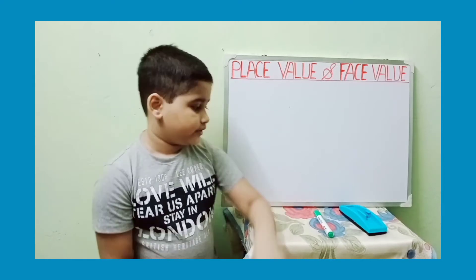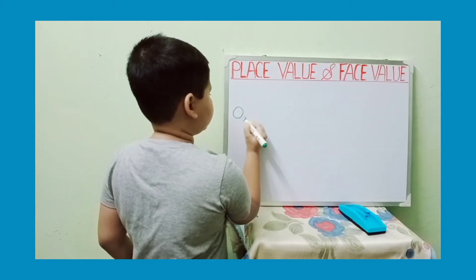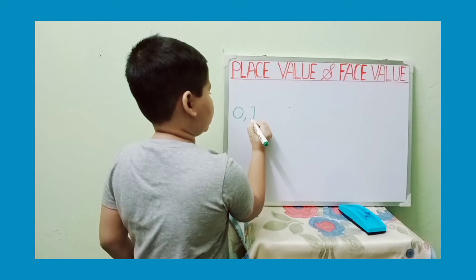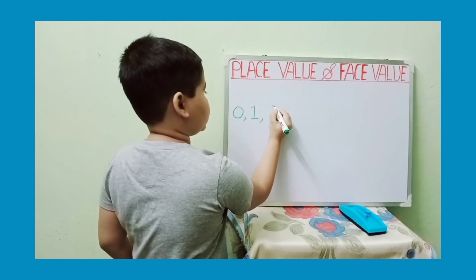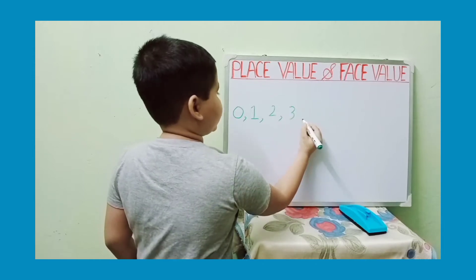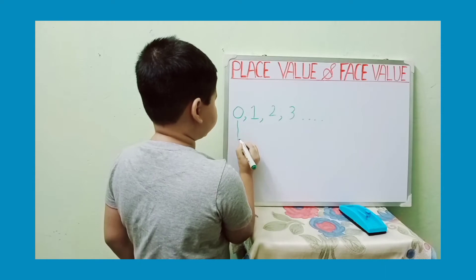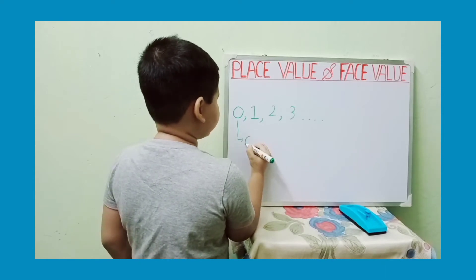Let's begin. So, what is face value? Face value of a digit is the digit itself. It never changes. Take any number — zero, one, two, three and so on. The face value of zero is always zero.